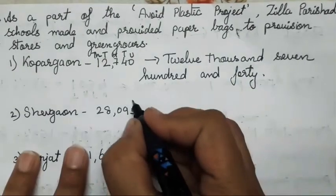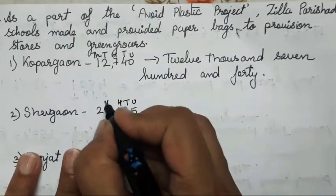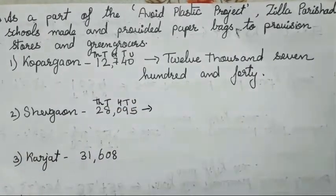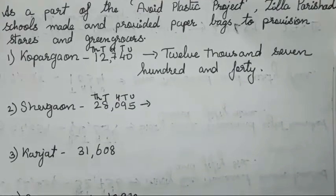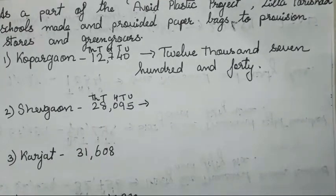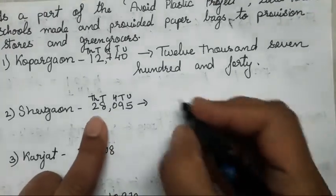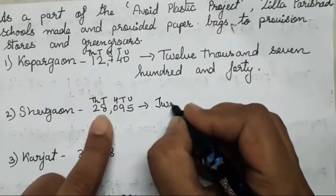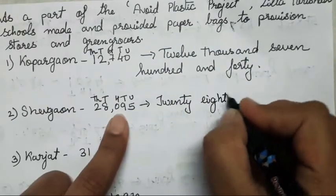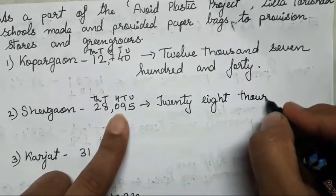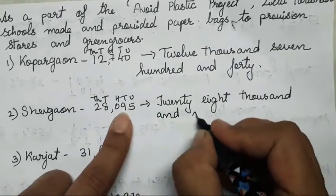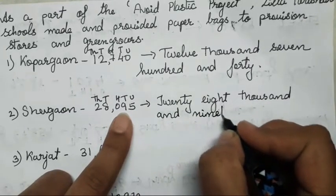Writing units is important as I said — I am repeating because bigger numbers are coming. You have to learn the way it has been read. Now this is going to be twenty eight thousand and ninety five.